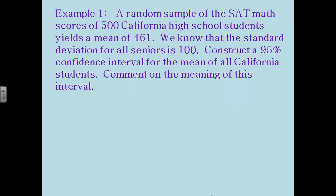So here's an example problem. A random sample of the SAT math scores of 500 California high school students yields a mean of 461. We know that the standard deviation for all seniors who take the test is 100. Construct a 95 percent confidence interval for the mean of all California students. So this time we're building a confidence interval to try and capture the true mean on the SAT math section for California high school students.